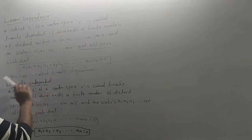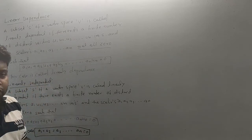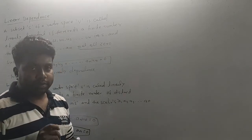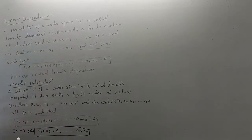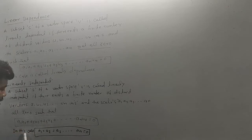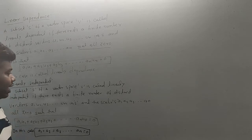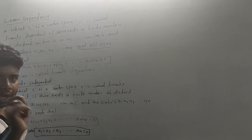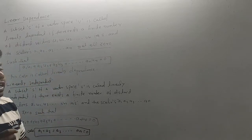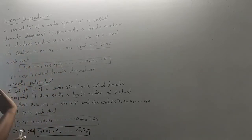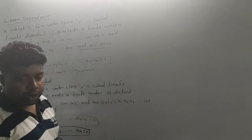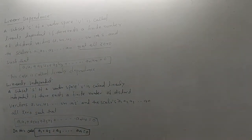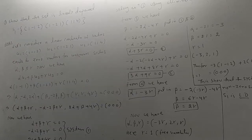So A1, A2, A3 are not all zero — at least one of them is non-zero. This is the same logic: if all scalars are zero that is the trivial case, but if at least one scalar is non-zero, then the vectors are linearly dependent. Please pause the video to note this statement.